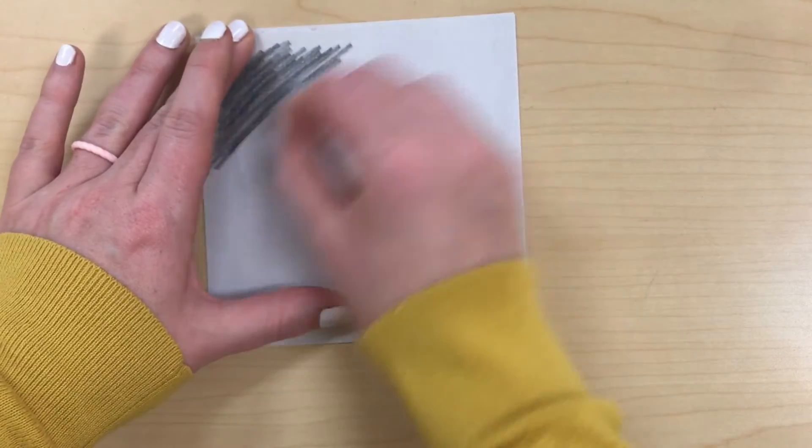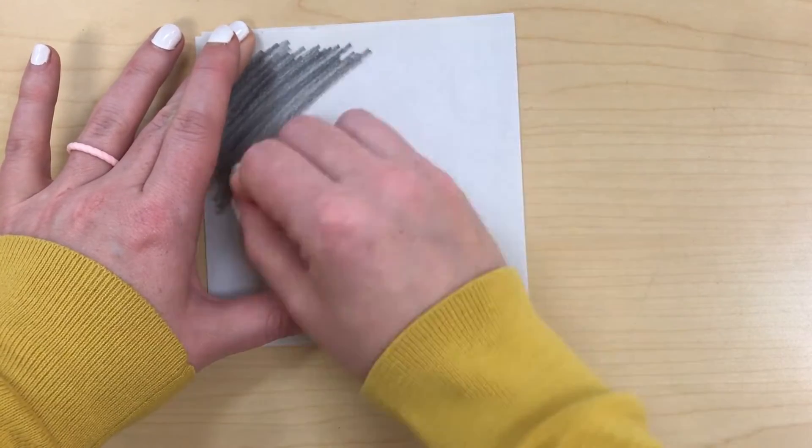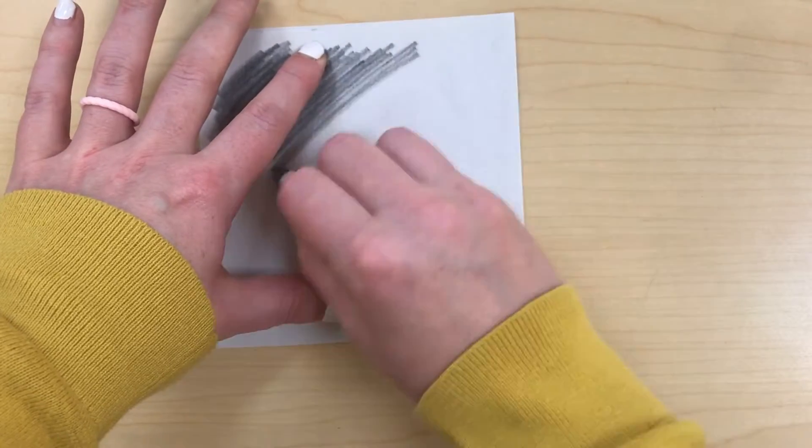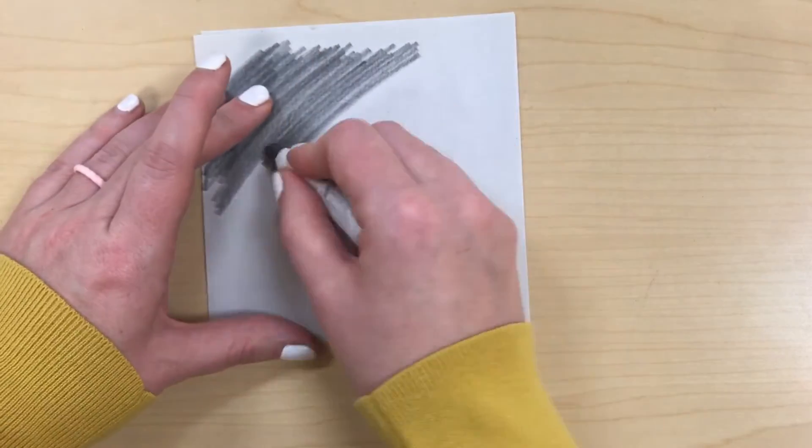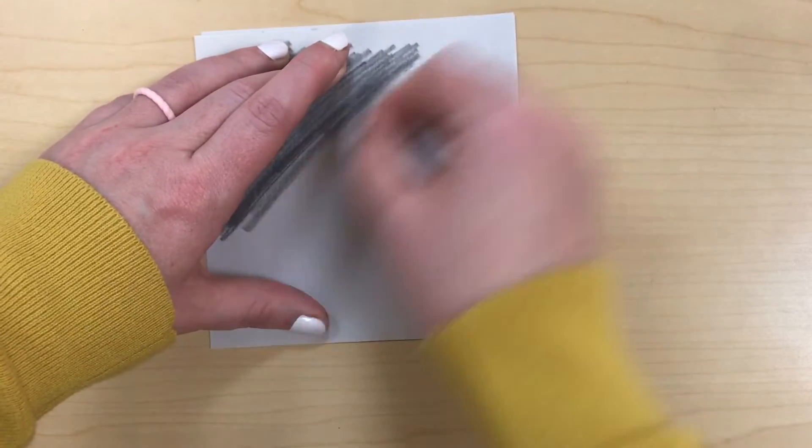We're going to cover the back of our image in graphite. The newsprint is kind of fragile. You want to go slow and steady because if you're too aggressive you will rip the paper. But we want to coat the whole back of this piece in graphite.